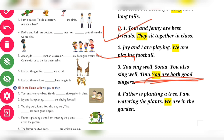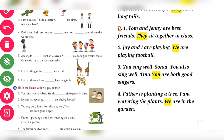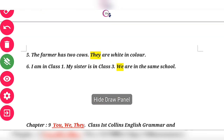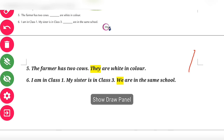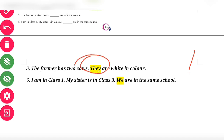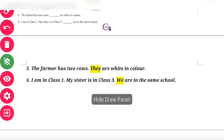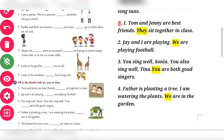Number four: Father is planting a tree, I am watering the plant, and 'We are in the garden.' Number five: The farmer has two cows — 'They are white in color.' Number six: I am in Class One, my sister is in Class Three, and 'We are in the same school.'